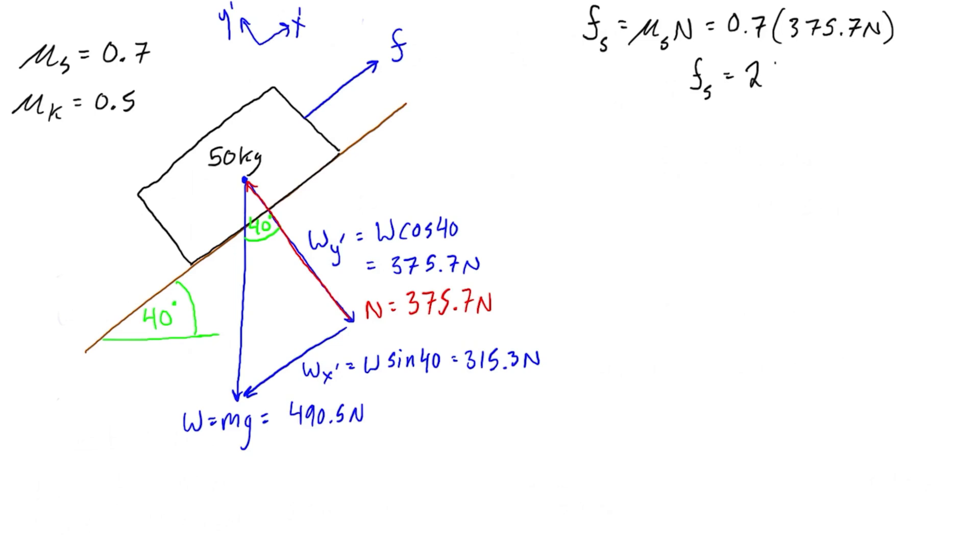So the static friction, the largest static friction force that we can get, is going to be 263 newtons. So when we look at the force balance in the x prime direction, which is the direction of the impending slip, we have Wx prime is 315.3 newtons going down the slope, and we have fs, 263 newtons, going up. So the imbalance is in the downward direction, the negative x prime direction, basically meaning that fs is not going to be big enough to resist that force caused by the weight.